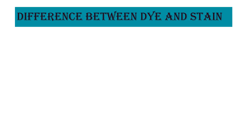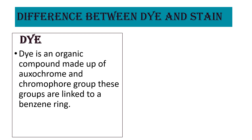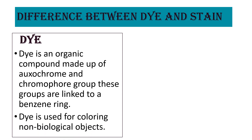Let's see the difference between dye and stain. Generally there are two types of staining agents: dye and stain. Dye is an organic compound made up of oxochrome and chromophore groups. These groups are linked to a benzene ring. Dye is used for coloring non-biological objects.